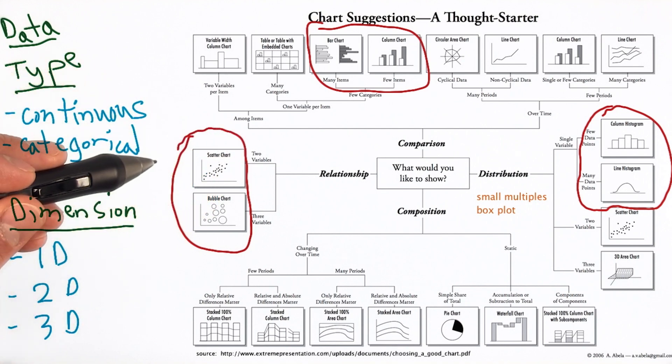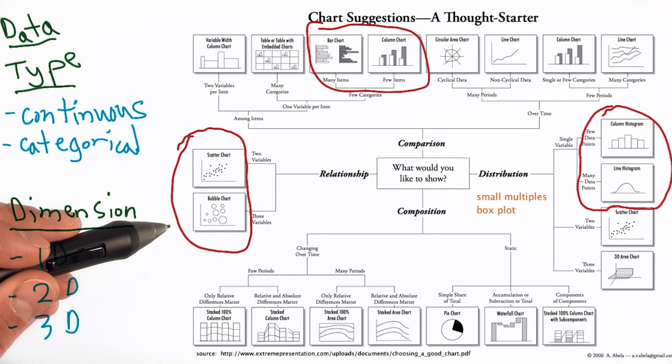A scatter plot can be generalized to a bubble chart if we need an additional dimension and visual encoding to represent. In this case, the bubble chart uses size of each of its circles to represent a third variable.